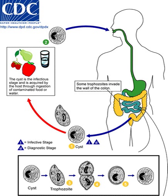A trophozoite is the activated, feeding stage in the life cycle of certain protozoan parasites, such as the malaria-causing Plasmodium falciparum and those of the Giardia group.